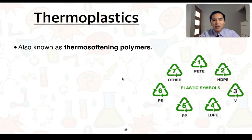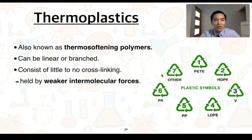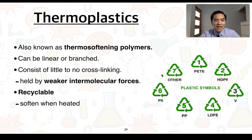From this point, we're defining polymers and classifying them as one of two types. The first is a thermoplastic, also known as a thermosoftening polymer. Thermoplastics can be linear or branched, and generally consist of little to no cross-linking, meaning they are held by relatively weak intermolecular forces. They are recyclable because when we apply heat they can soften, the polymer chains can be separated from one another, and the polymer can then be remoulded and repurposed.